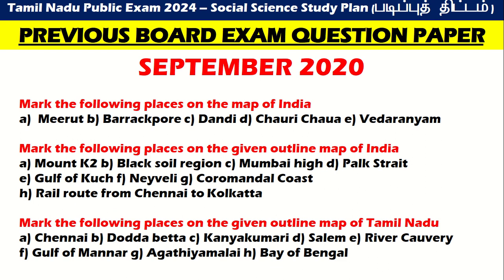September 2020 paper — mark the following places on the given outline map of India: Mount K2, Black Soil Region, Mumbai High, Palk Strait, Gulf of Kutch, Neyveli, Coromandel Coast, and the rail route from Chennai to Kolkata. Then goes to map of Tamil Nadu for September 2020.